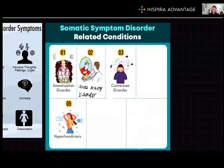Finally, we have somatic symptom and related disorders. These involve significant bodily symptoms with no clear medical explanation — they come out of nowhere and physicians aren't sure why. The first is somatic symptom disorder, where a person has excessive concern over a symptom. For example, if you have a runny nose, a person with somatic symptom disorder might think their brain is melting out of their nose.